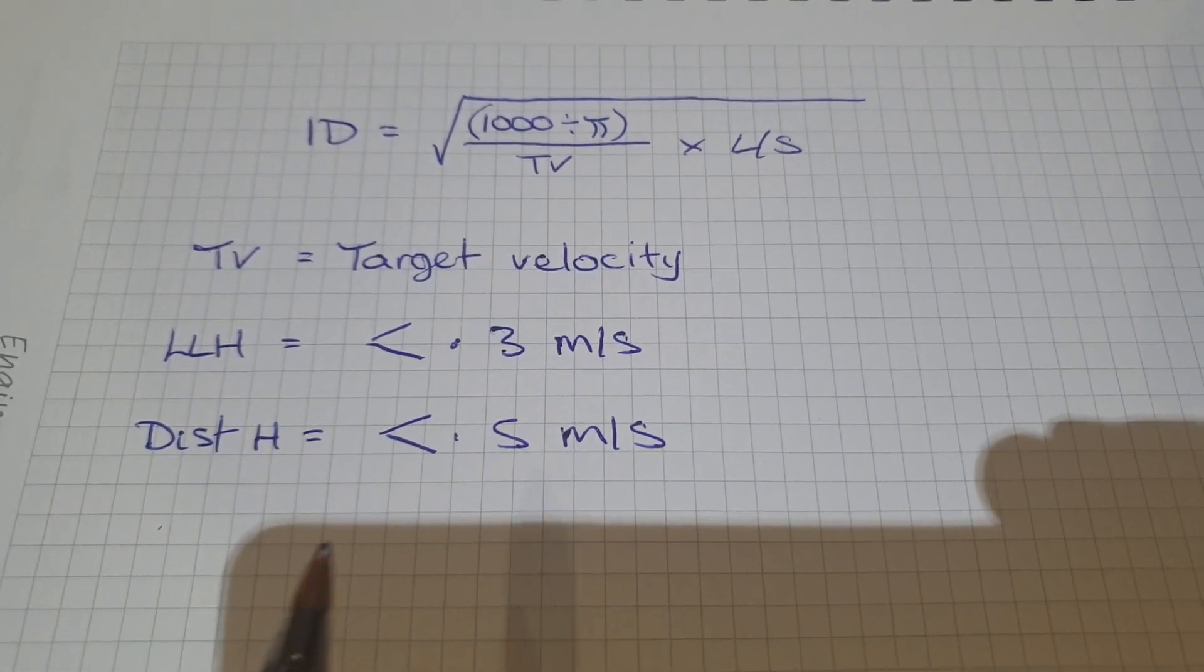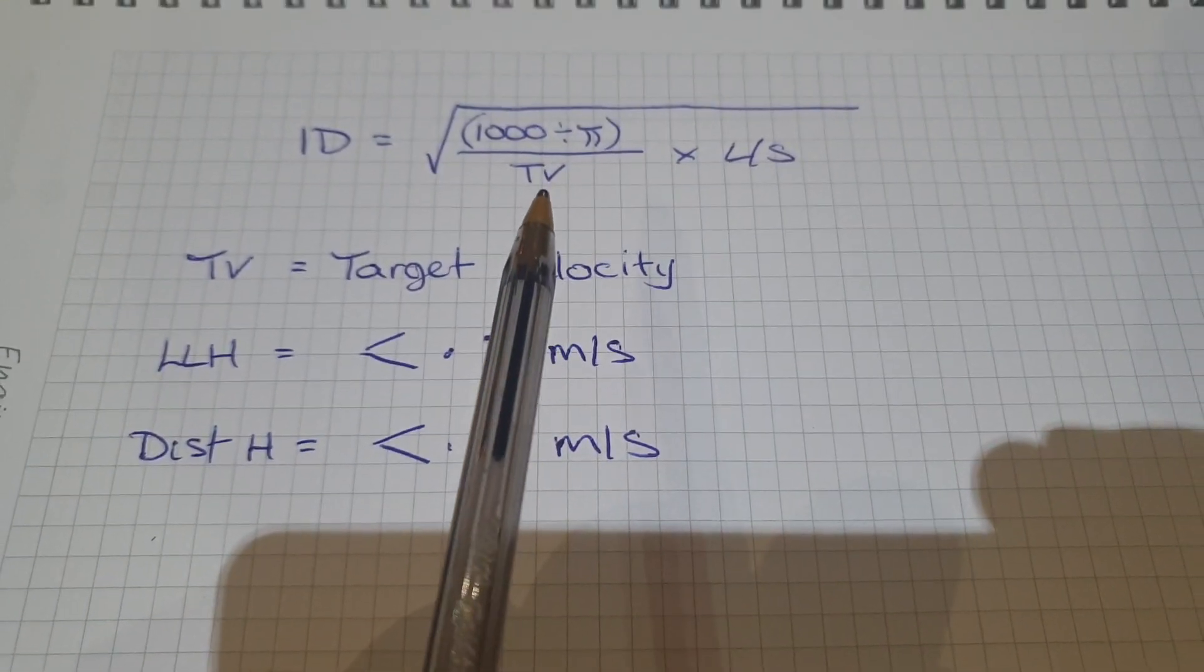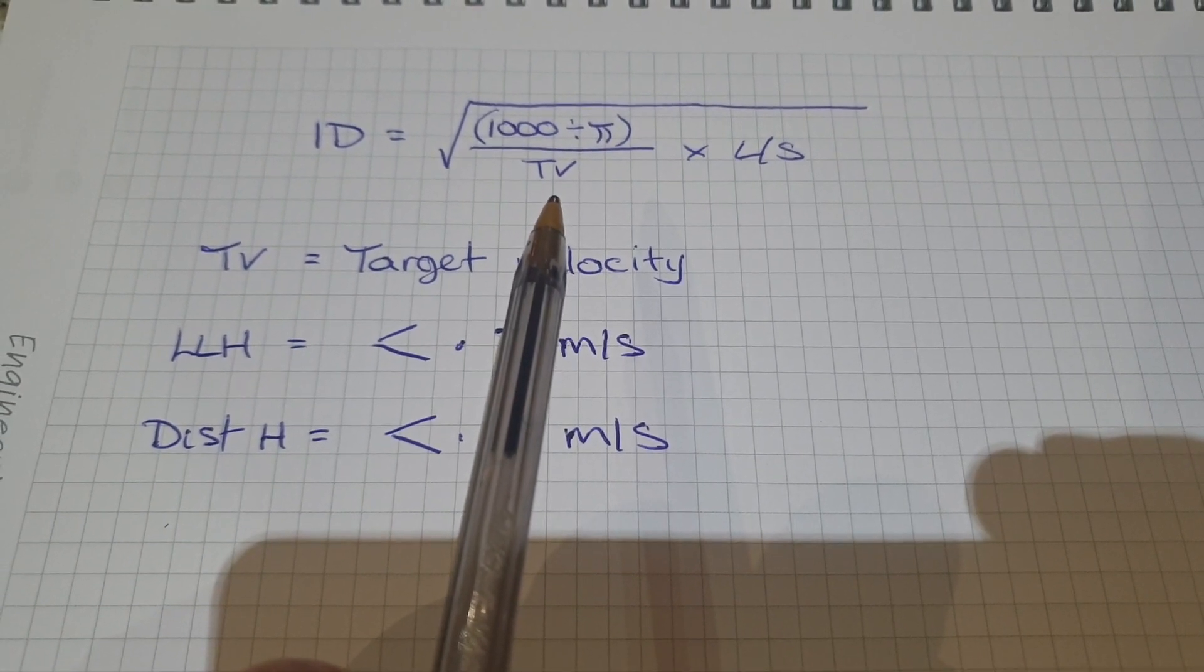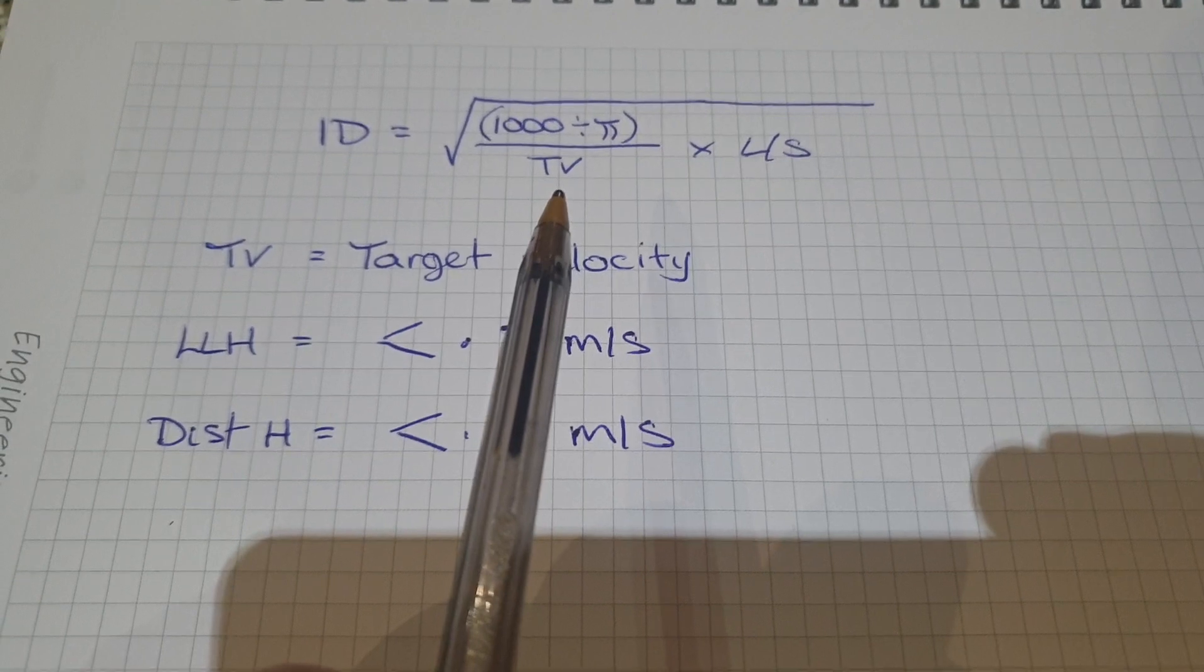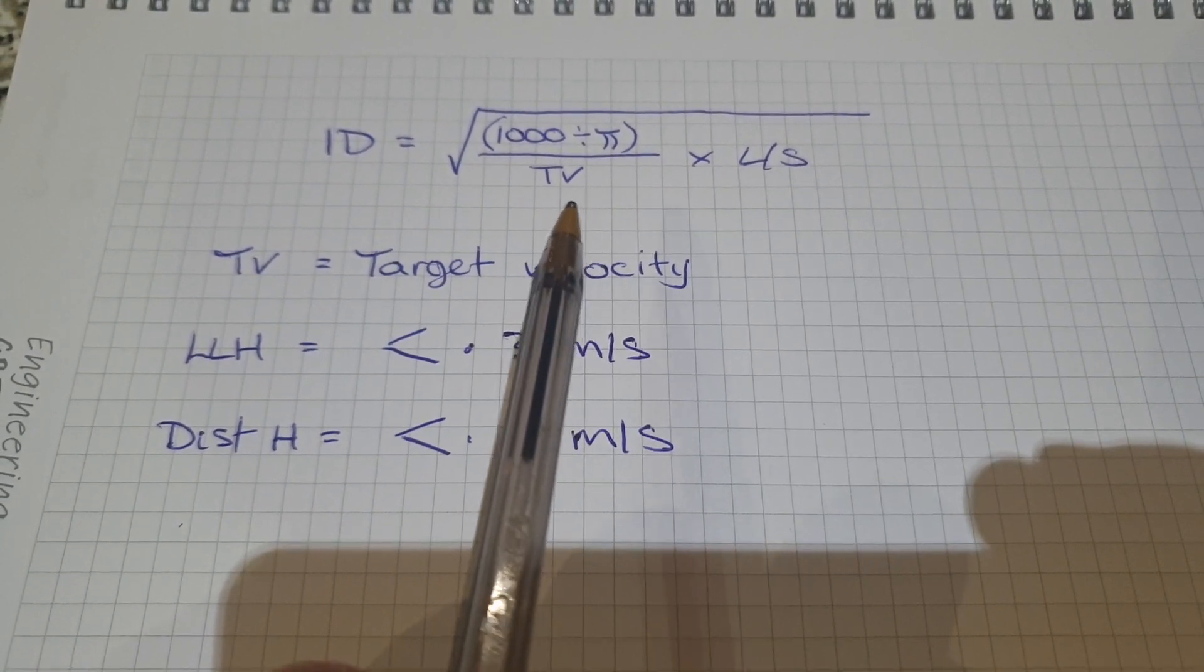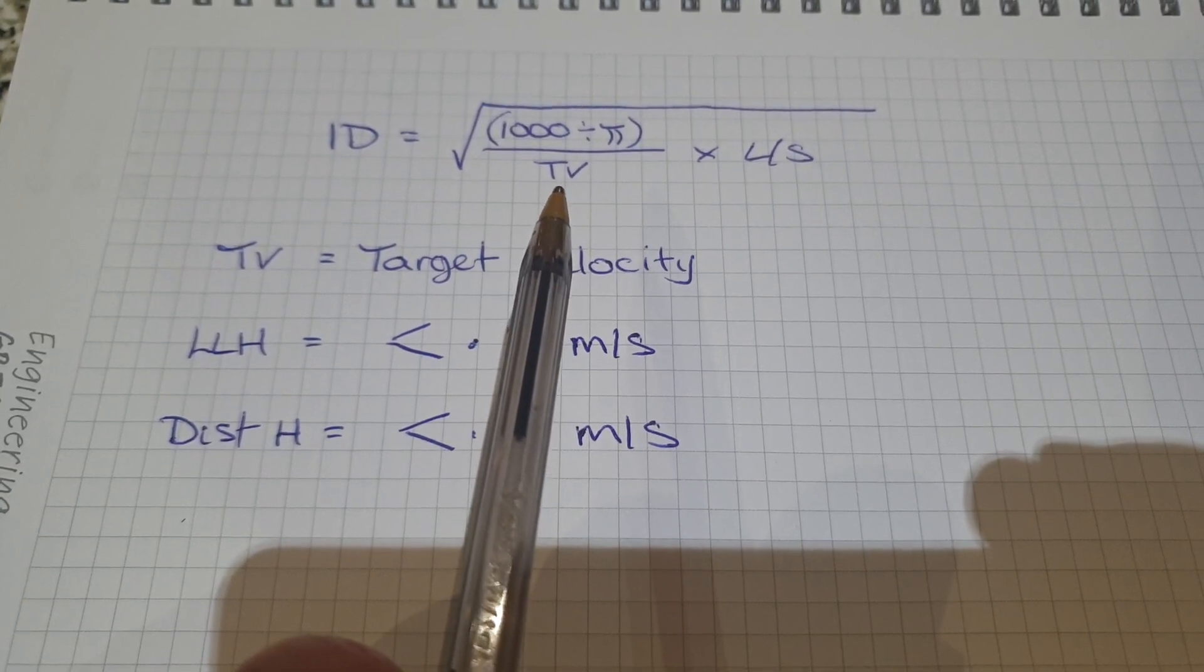For heating pipes, by the way, which I haven't loaded here, the target velocity is 0.9. Some sources claim or state 1 meter per second. Simply in the design book put 0.9, and I've seen it used very commonly to use the value of 1 meter per second.